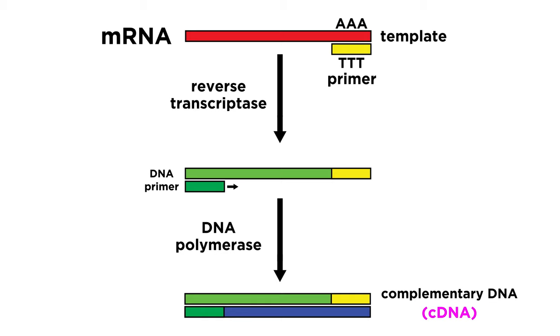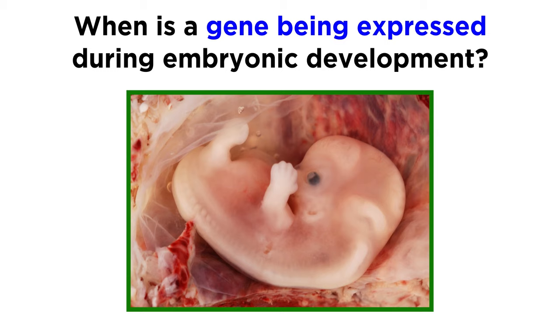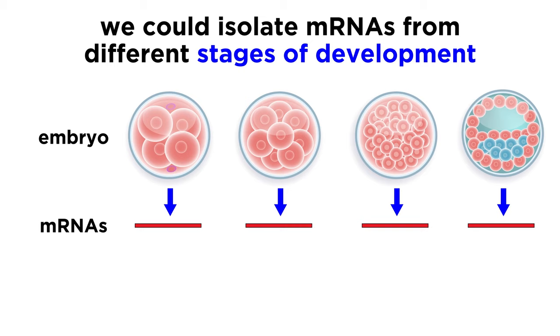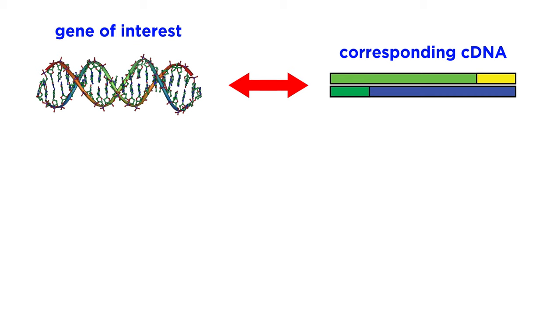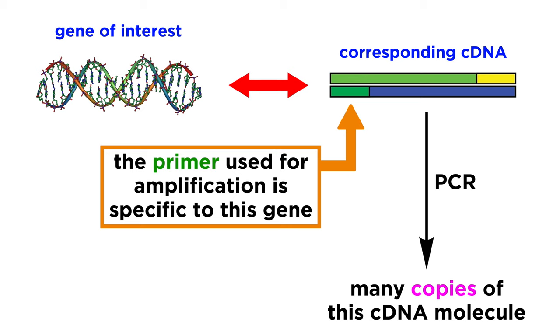Now we can examine some applications of this approach. Say we want to know precisely when a gene is being expressed during the embryonic development of an organism. We could isolate the mRNAs from different stages of development, and perform RT-PCR to get cDNA fragments that correspond to all of these mRNAs. Then we could amplify a specific cDNA molecule that represents the gene of interest, using the polymerase chain reaction, by employing a primer that is specific to the gene of interest, so that only the cDNA representing the gene of interest is amplified.